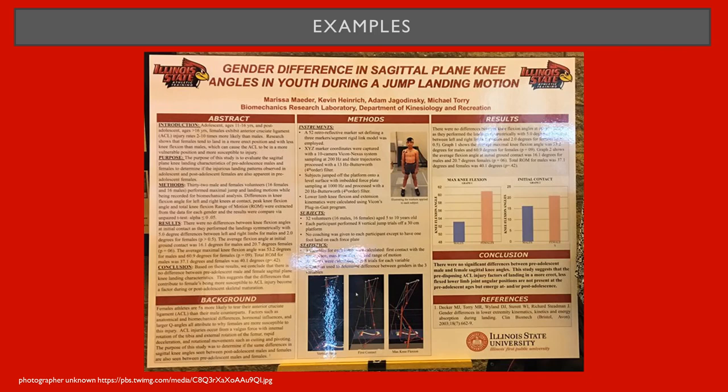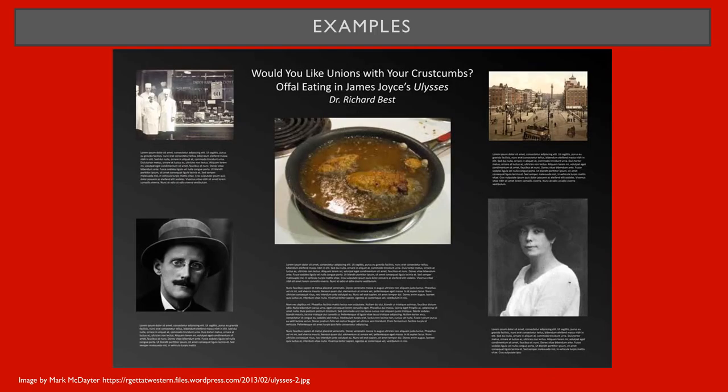An improvement would be creating more white space between the columns and sections. This poster is humanities focused. There is a good balance between text and images, and the color scheme matches the historical context. The biggest improvements that could be made are using larger text, creating a better connection between the images and text, and creating greater contrast between the black and white photos and the dark background.